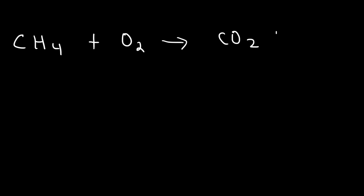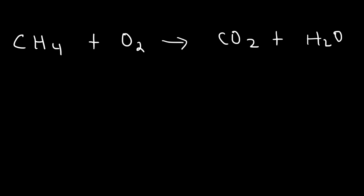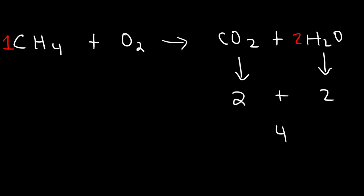If this reaction is carried out to completion with excess oxygen, the products will always be carbon dioxide and water. Then we need to balance the equation. We have one carbon atom on each side. We have four hydrogens on the left and two on the right, so we put a two in front of water. To balance oxygen: two from CO₂ and two from water gives four on the right, so we put two in front of O₂.